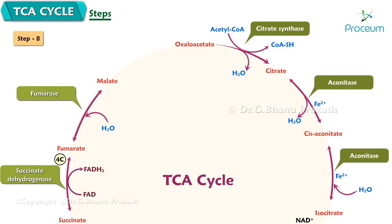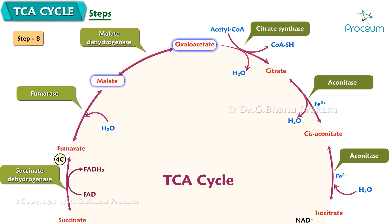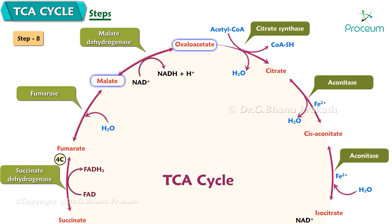Step 8: Conversion of malate to oxaloacetate — the final step in the citric acid cycle. The enzyme is malate dehydrogenase. Malate is dehydrogenated to oxaloacetate and one NADH is generated. Oxaloacetate has a catalytic role, similar to ornithine in the urea cycle.